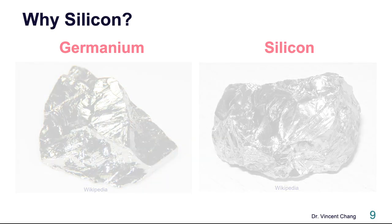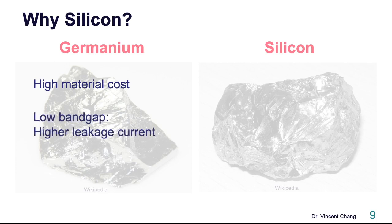There are several reasons. Number one: germanium has a very high material cost — it's very expensive to obtain pure germanium. Number two: germanium has a low band gap. I will teach you the definition of band gap in an upcoming lecture, but if a material has a low band gap, the leakage current will be high. Low band gap means higher leakage current for the device, which is not good.